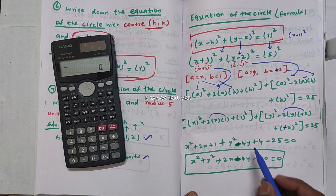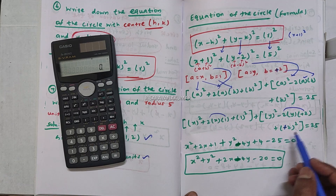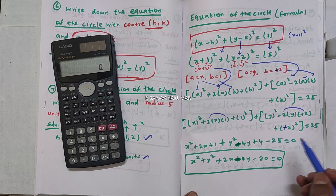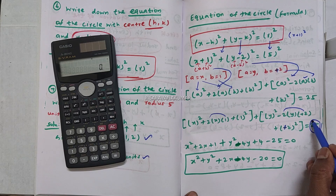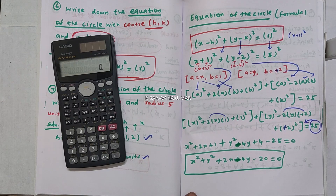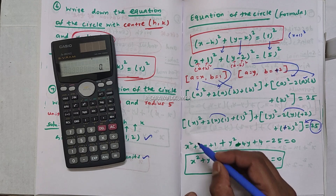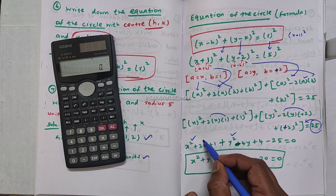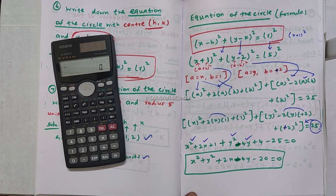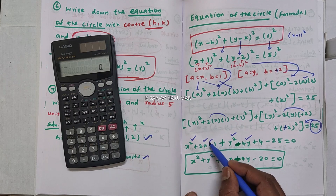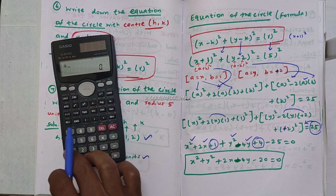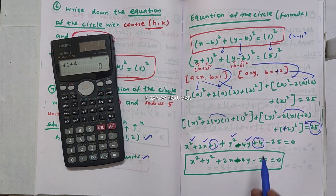Minus 2 into 2 is minus 4y, plus 4. So we have x squared plus y squared plus 2x minus 4y.